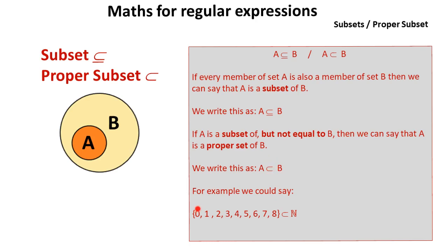For example, we could say the set 0, 1, 2, 3, 4, 5, 6, 7, 8 is a proper set of the set of natural numbers.